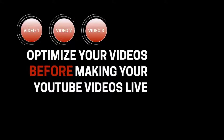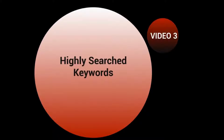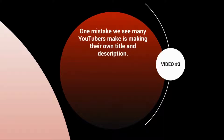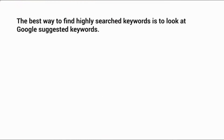Welcome to video number three. Let's talk about highly searched keyword terms and how you can figure out what your main keyword and sub keywords are going to be. One mistake many YouTubers make is simply making their own title and description — it's natural, but instead of deciding what you think will work, why not use what is already working? Do some simple keyword research so you'll have the right information to rank on the right keywords.